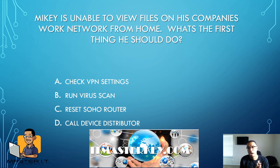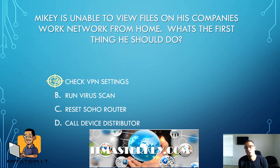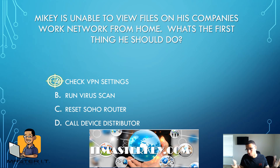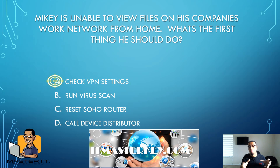Mikey is unable to view files on his company's work network from home. What's the first thing he should do? Check VPN settings. A VPN is a virtual private network that allows you to access something private from a public connection. The VPN encrypts the traffic going from his home to his work network, giving it a secure connection.